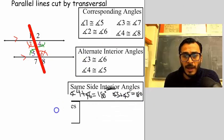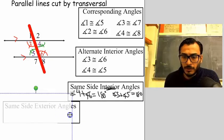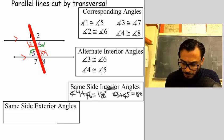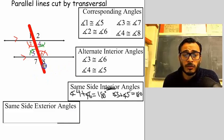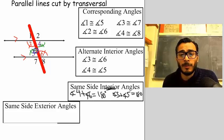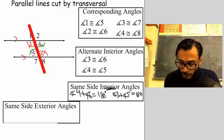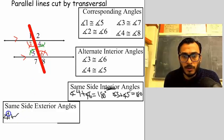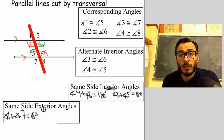Then we have same side exterior angles. These are like same side interior except they're exterior — outside of the parallel lines. So that would be angle one and angle seven; angle one plus angle seven add up to 180. Same side exterior angles are also supplementary.